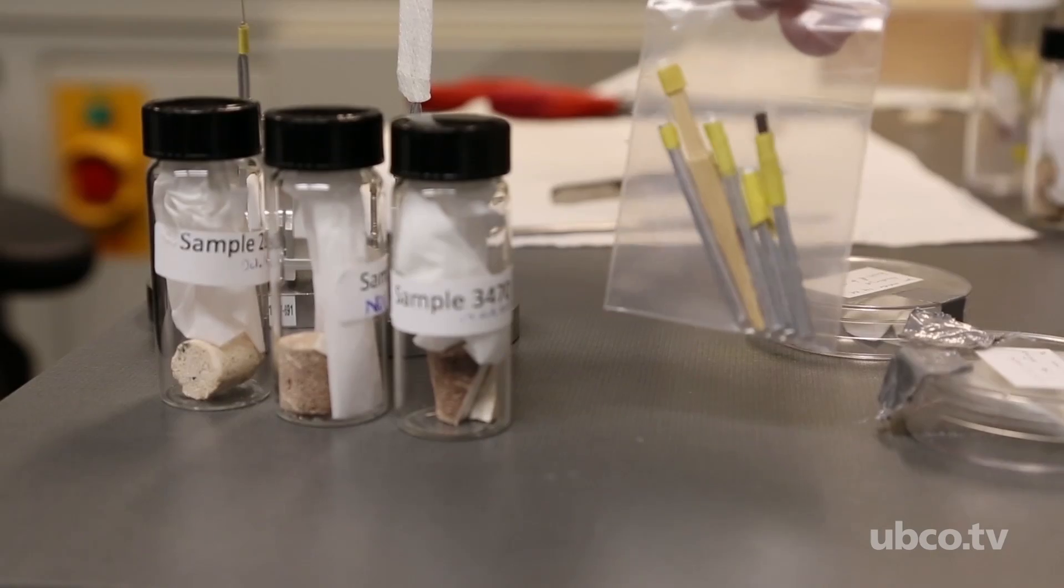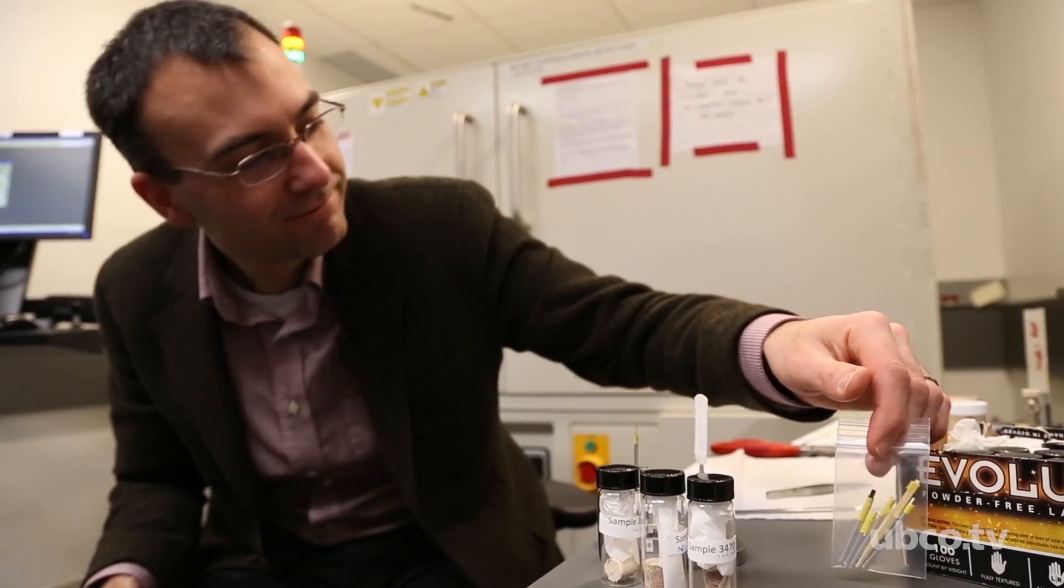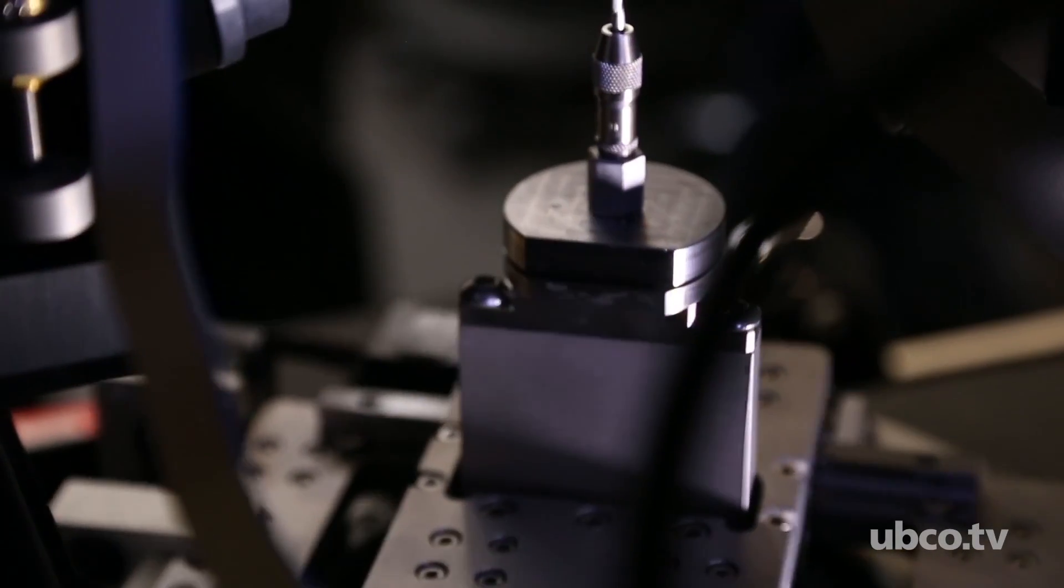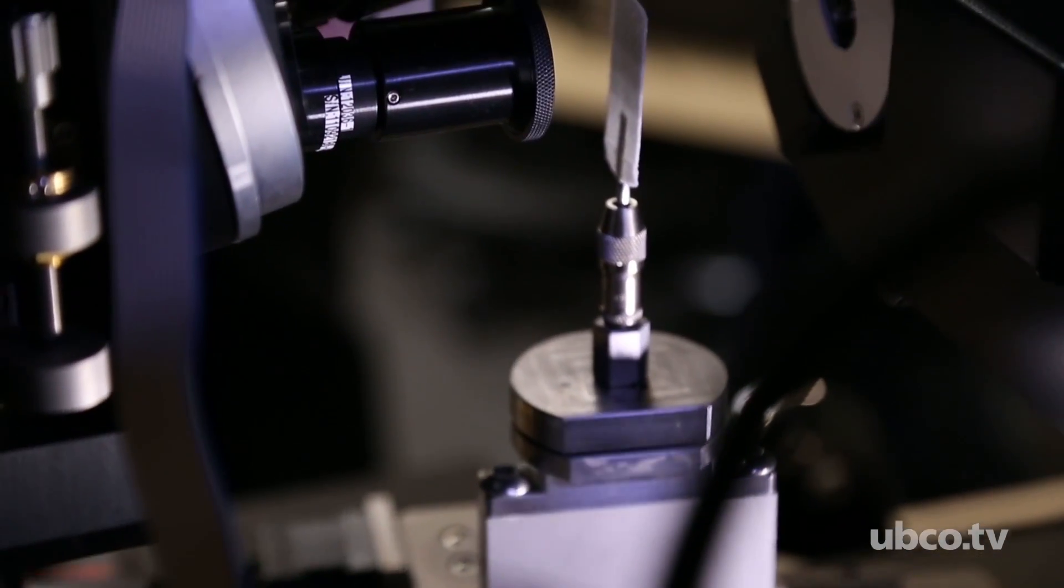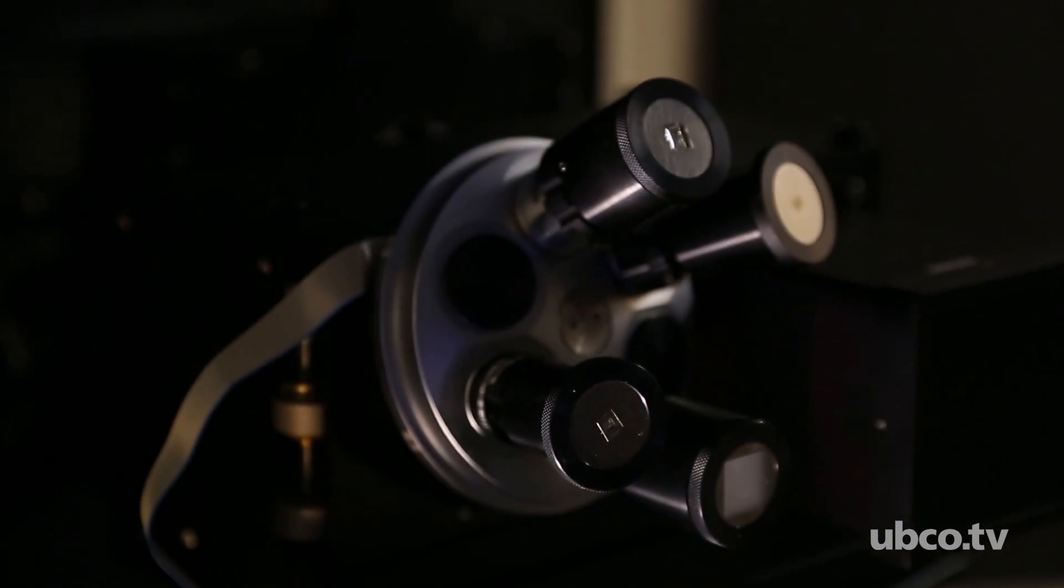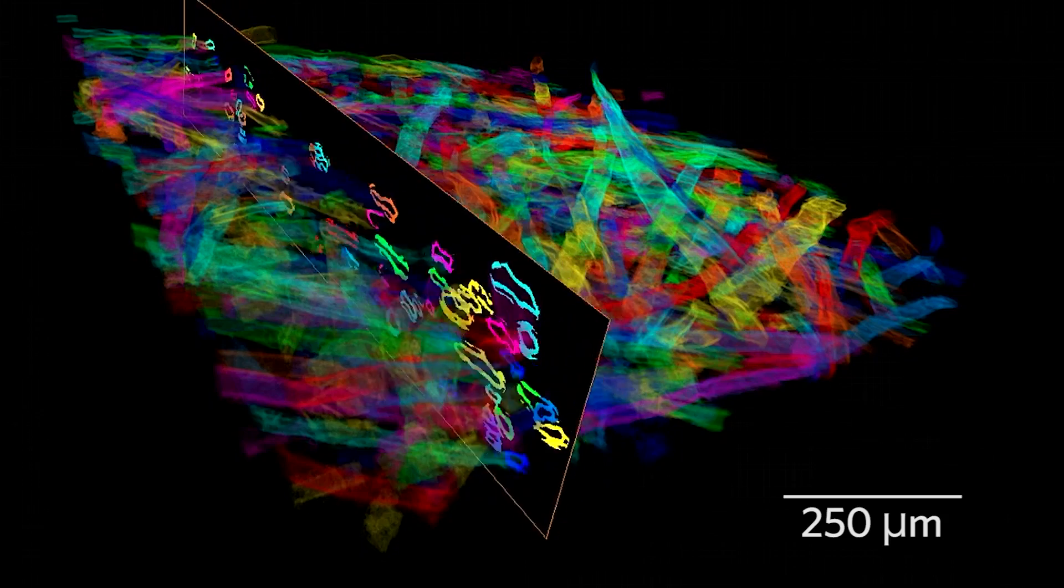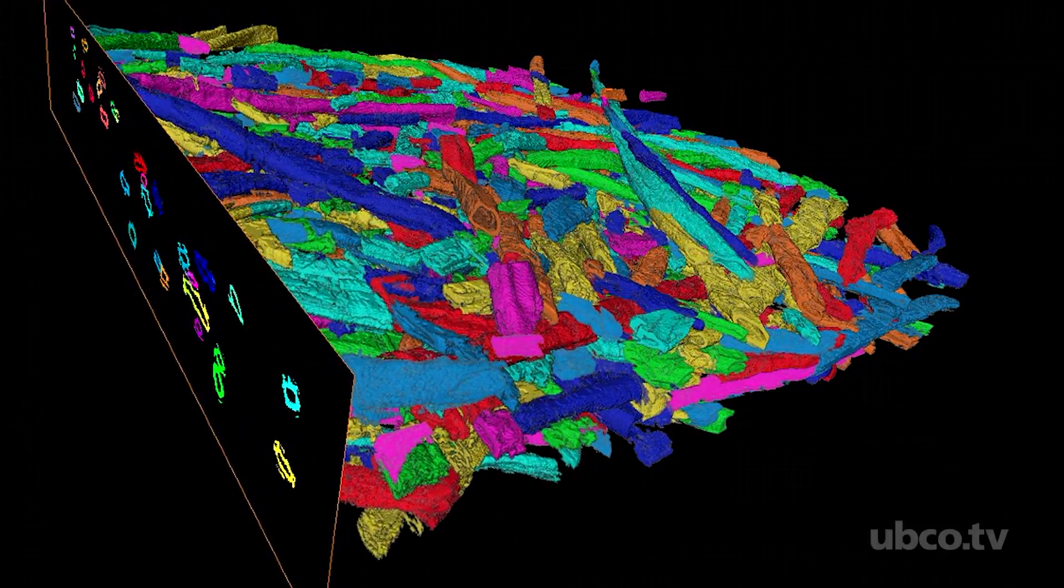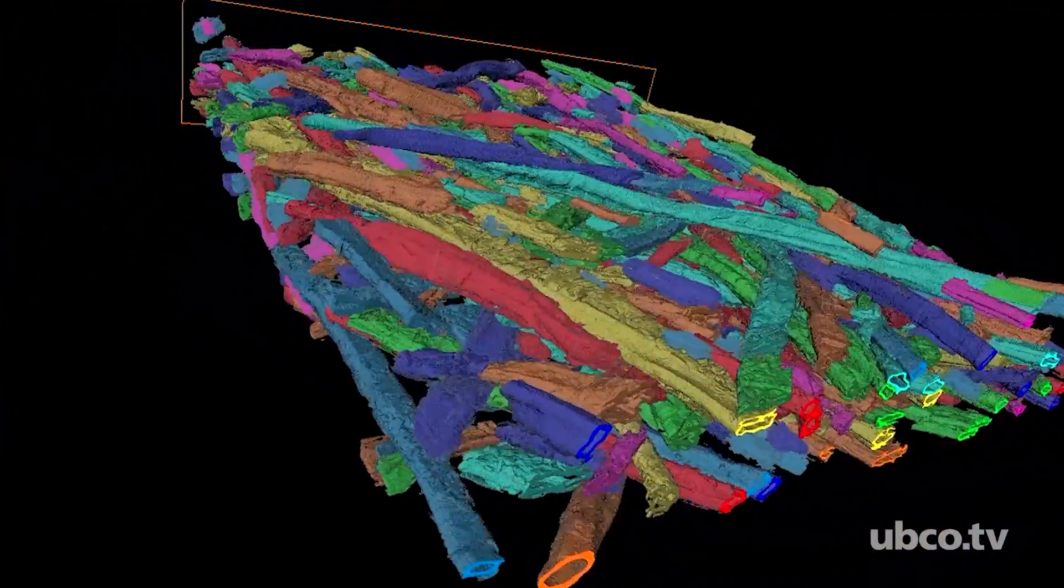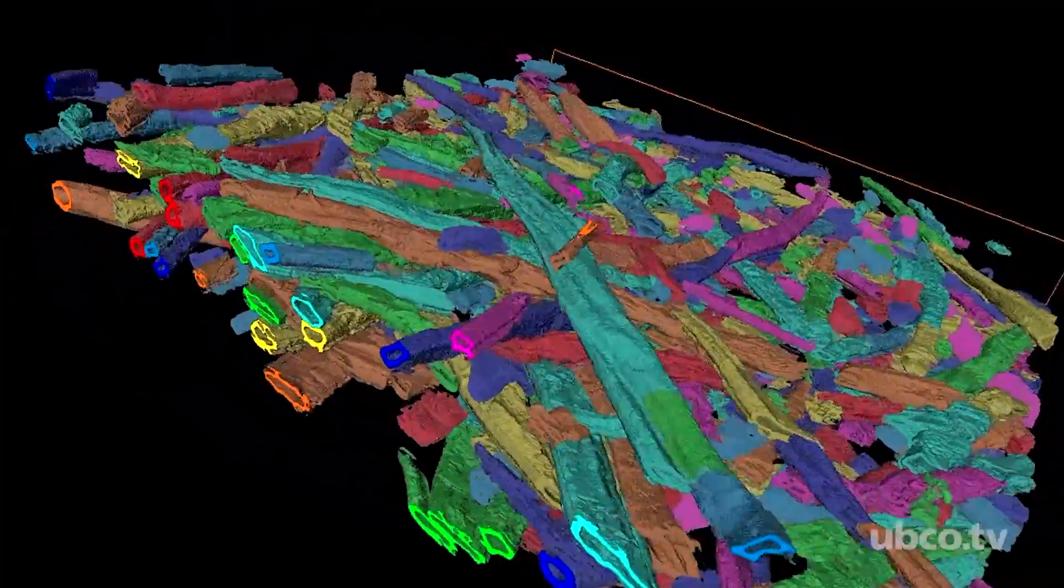This instrument provides us with a unique ability to image materials in ways we couldn't have done before. We're able to see the intrinsic structure in all three directions. That allows us to look at the variations in material structure, the variations in defects, and to see things in ways we could never do before.